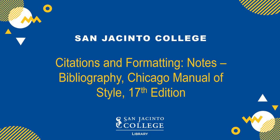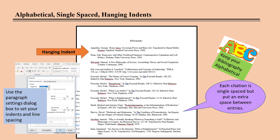Creating a Bibliography in Chicago Manual of Style 17th Edition Notes Bibliography System. Your bibliography begins on a separate page at the end of your research paper. The word bibliography is centered at the top of the page with two empty returns between it and the start of your citations. Your citations begin flush with the left margin, are single-spaced with a hanging indent where the citation wraps to two or more lines. There is an empty return between citations.